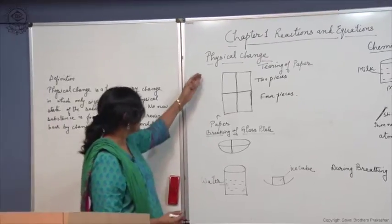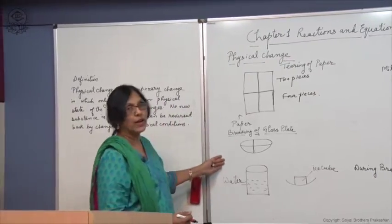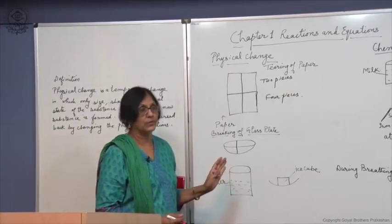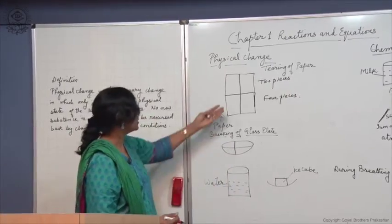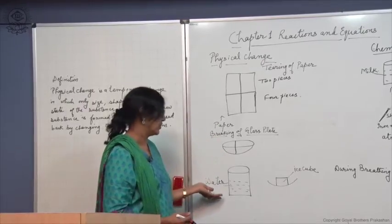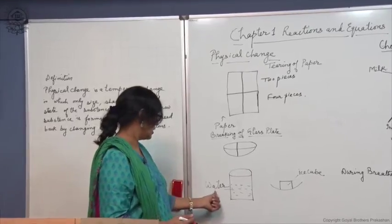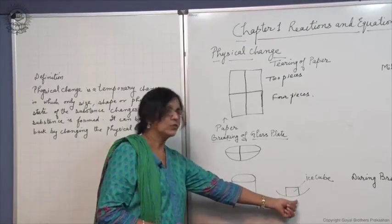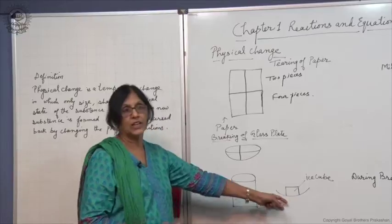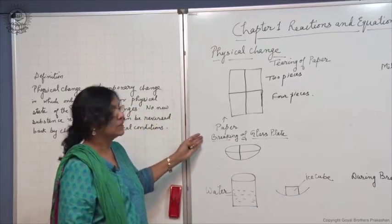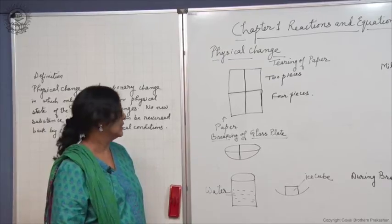In all these changes, what do you find? That the substance has not changed. Substance remains the same. Only the shape has changed or the physical state has changed. As in this particular case, the liquid has changed into solid. Otherwise, a new substance has not been formed. So, these are all examples of physical change.